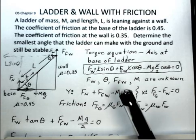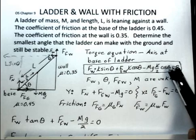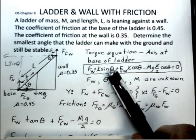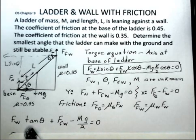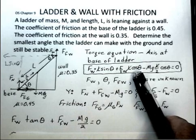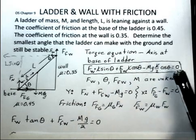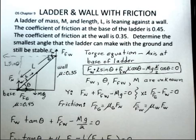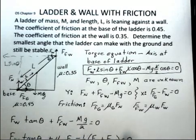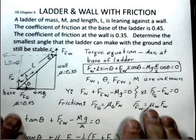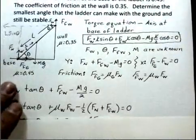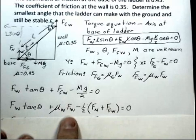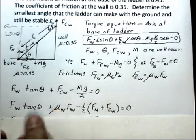Going back to the torque equation, I divide every term by cos θ. Sin θ divided by cos θ generates tan θ. In the middle term, cos θ divided by cos θ cancels. And in the Mg term, cos θ cancels as well, leaving Mg/2. We still have too many unknowns, so I aim to make substitutions so that only Fw appears in each term. We already have Fw in the first term, and now in the middle term I can replace the friction force at the wall with μ_w times Fw.